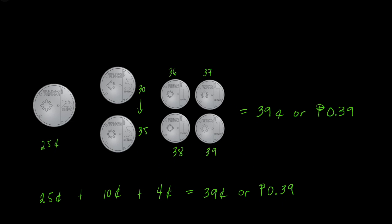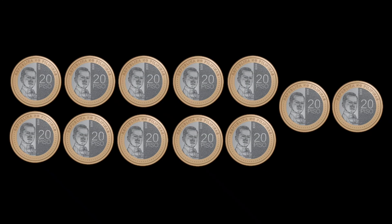The next ones are 20-peso coins. How much are these? Since all the coins are 20 pesos, we can just simply skip count by 20. So that would be 20, 40, 60, 80, 100, 120, 140, 160, 180, 200, 220, and 240.